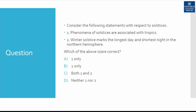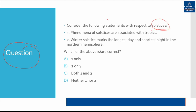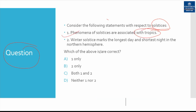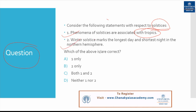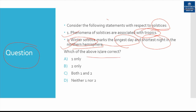Before beginning our discussion, I would like to put forward a question related to solstices. Consider the following statements with respect to solstices. The first statement says phenomena of solstices are associated with tropics. The second statement says winter solstice marks the longest day and the shortest night in the northern hemisphere. You can answer this question in the comment box. If you don't know the answer, watch this video till the end and you will know each and every aspect of the solstice.